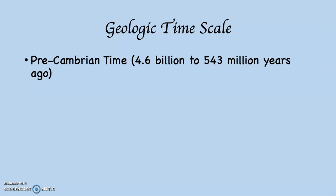However, most people agree life began towards the end of Precambrian time. 4.6 billion years ago, there would have been swirls of dust and gases going around the Sun. That material would bump into each other, accrete together, get larger as a result of that, gain gravity, and then act like a vacuum going around the Sun, sucking in more and more material, making the planets bigger and bigger.